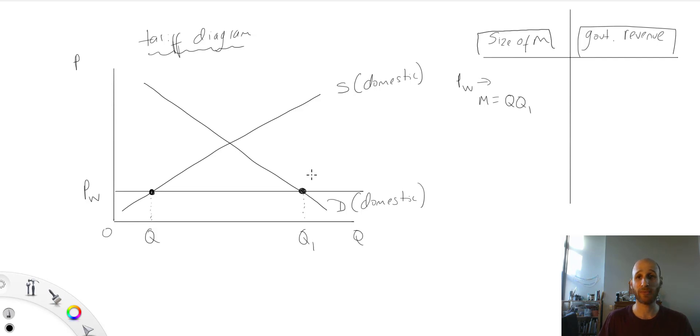In terms of government revenue, at Pw, government revenue would equal zero. There is no tariff imposed at this point.